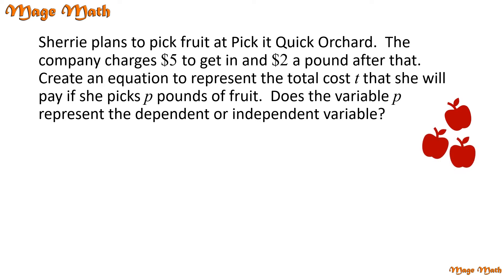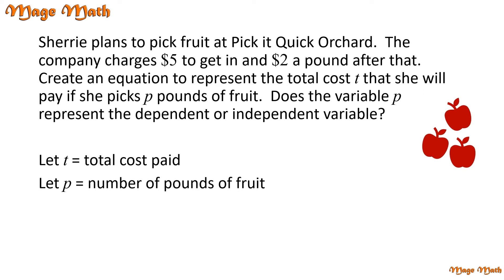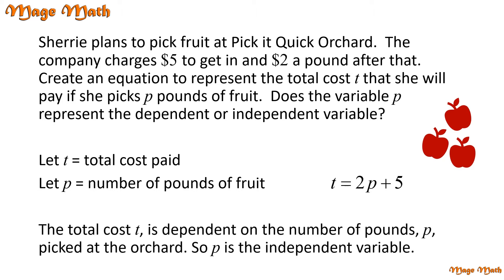Sherry plans to pick fruit at Pick It Quick Orchard. The company charges $5 to get in and $2 a pound after that. Create an equation to represent the total cost t that she will pay if she picks p pounds of fruit. Does the variable p represent the dependent or independent variable? Let's assign our variables. Let t equal the total cost paid and let p equal the number of pounds of fruit. The total cost Sherry will pay is equal to $2 per pound plus $5, which is the flat rate charge for entering the orchard. We can write the equation as t equals 2p plus 5. The total cost t is dependent on the number of pounds p picked at the orchard, so p is the independent variable.